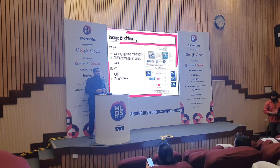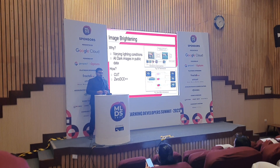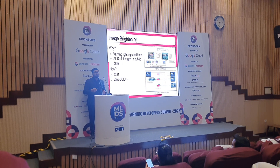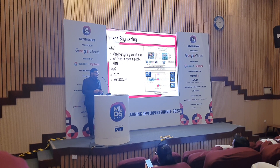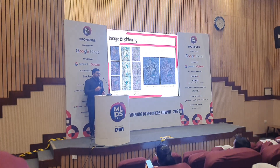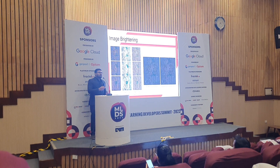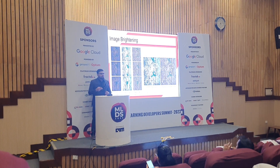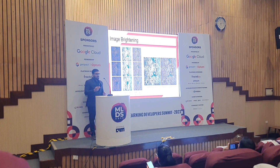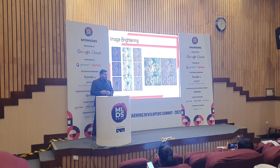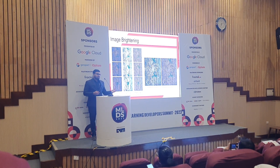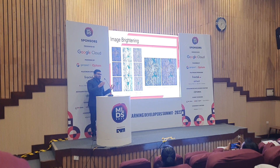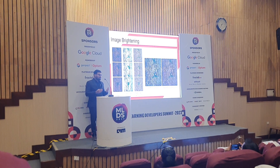The second brightening method is ZDC++. We leveraged an off-the-shelf model trained on a large dataset and used it as-is. Using both approaches, we obtained different extents and types of brightening, and used both in our training dataset. In this slide we can see two GIFs showing the transition from a dark image to a bright image.